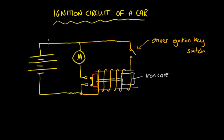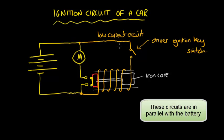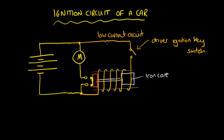That means a current will flow from the battery into the low current circuit. That will have thin wires and quite long wires to get to where the driver is from the engine. Current will flow along here through the closed switch and activate the electromagnet.